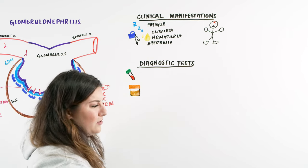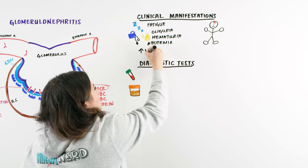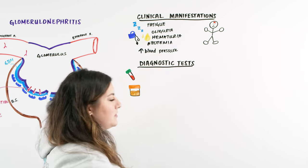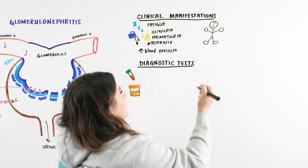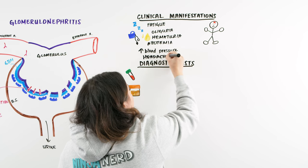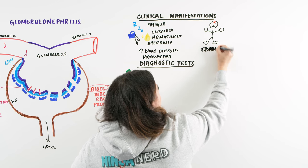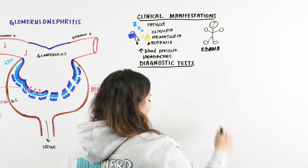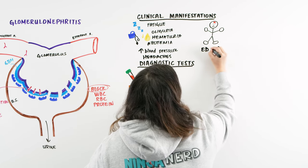Further assessment might reveal the patient is also getting headaches more often. And when you look at their face, their eyes, their hands, maybe their legs depending on how far along we are, you might notice some sort of swelling — this patient may be showing edema. The edema may first show up on the face and eyes and then go to the feet, hands, and even into the lungs.